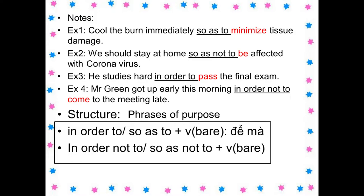Number 2: we should stay at home so as not to be affected with coronavirus. Chúng ta nên ở nhà để không bị nhiễm virus corona. Number 3: he studied hard in order to pass the final exam. Anh ấy học chăm để đậu kỳ thi cuối. Chúng ta ôn lại 'in order to' cộng với động từ nguyên thể ở bài số 5 ta đã học.